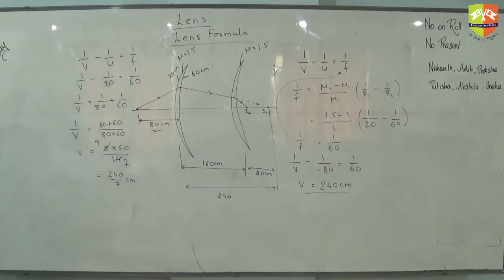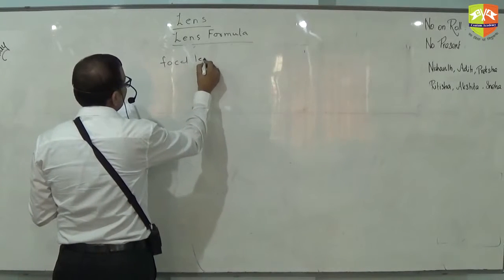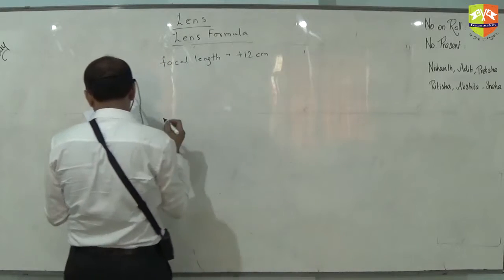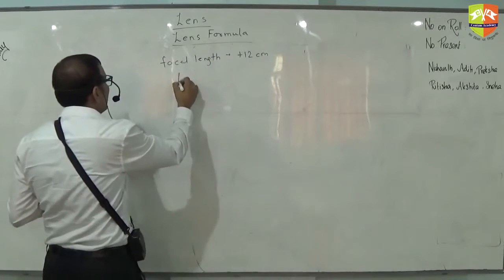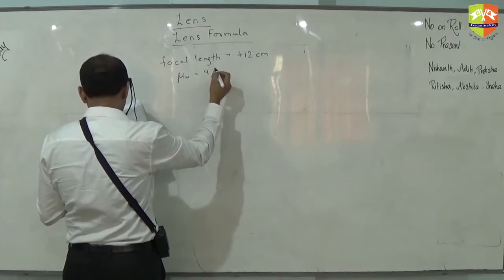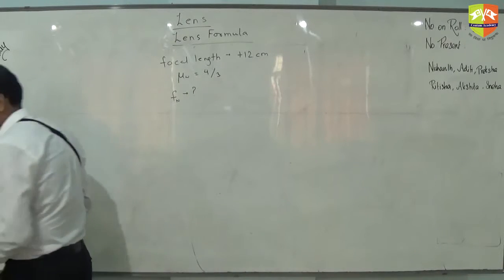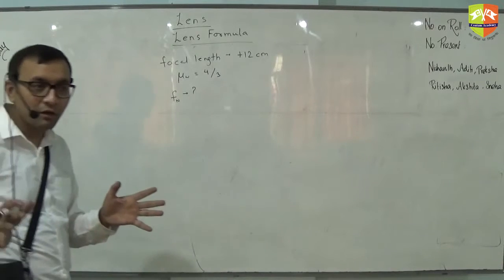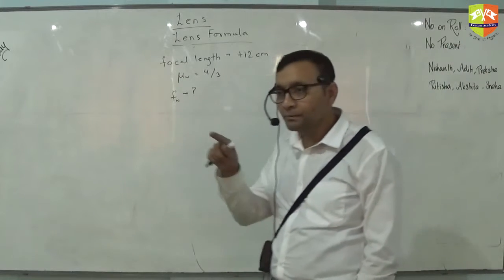In HC Verma, what is written? A thin lens of focal length plus 12 centimeter. This is the focal length given. Now this lens is immersed in water of refractive index 4/3. What is the new focal length? Focal length in air is given. Focal length of this lens in air is given. We need to find focal length in water. So if I change the refractive index of medium, will focal length change? It should change. It depends on the medium refractive index also. μ1 is medium refractive index.